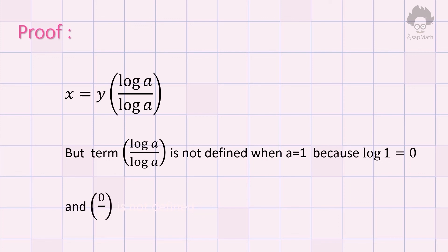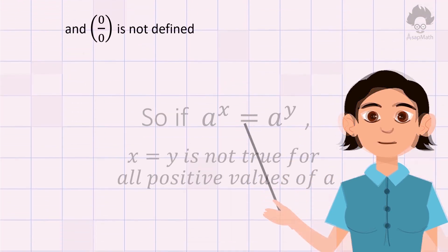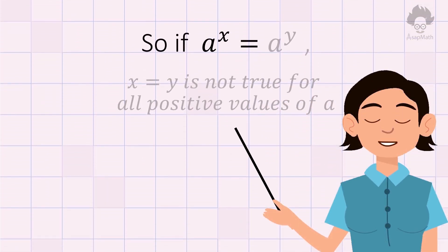In math, 0 divided by 0 is not defined. So a can't be 1. We have now shown that if a to the power x equals a to the power y, then x equals y is not true for all positive values of a.